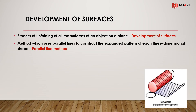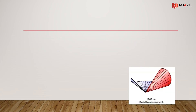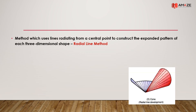The method which uses parallel lines to construct the expanded pattern of each three-dimensional shape is called the parallel line method. This method is used for prisms and cylinders — objects having parallel elements. The method which uses parallel lines radiating from a central point to construct the expanded pattern is called the radial line method, and it is used for cones and pyramids.